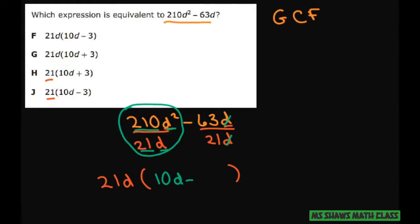These d's cancel. And then 63 divided by 21 is 3.